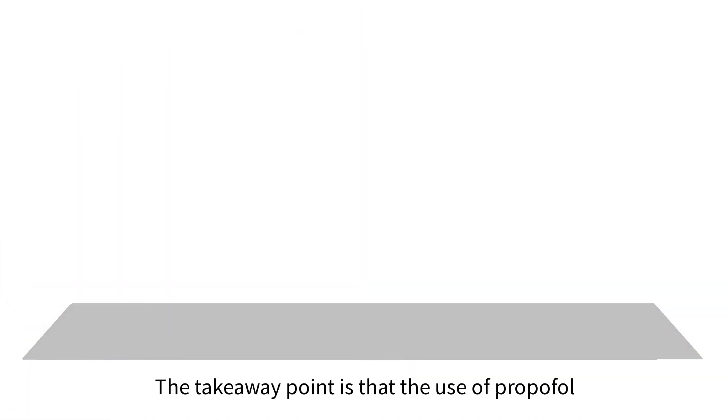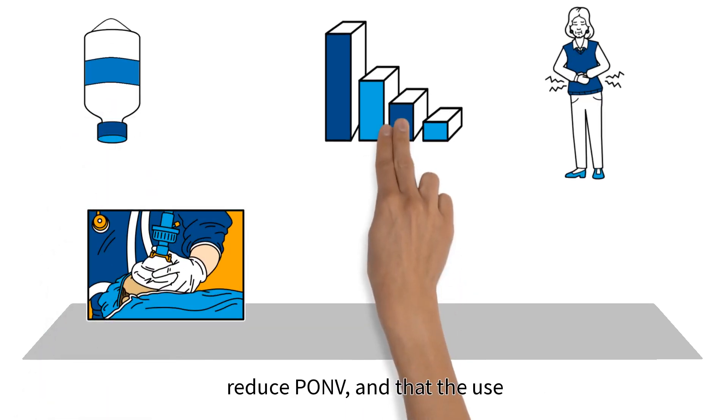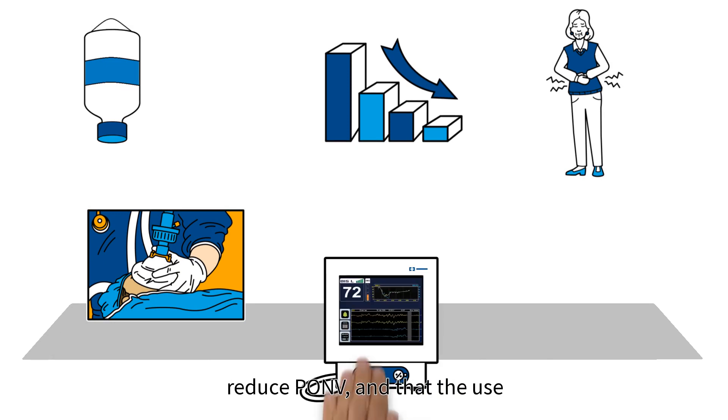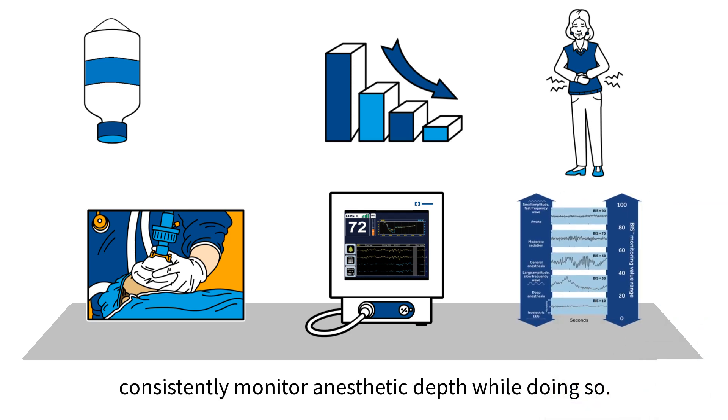The takeaway point is that the use of propofol instead of inhaled anesthetics can reduce PONV, and that the use of EEG monitoring such as BIS monitoring provides the ability to consistently monitor anesthetic depth while doing so.